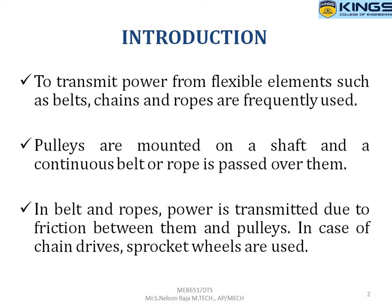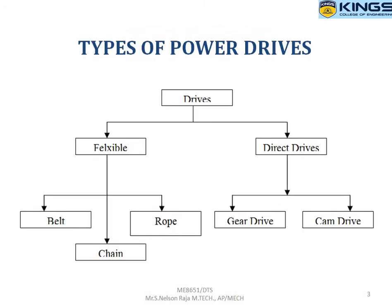Power transmitting elements are classified into two categories: flexible transmission systems and rigid transmission systems. Flexible power drives are flexible in nature, meaning they are movable, while rigid power transmission systems are in a fixed condition. The belt drive comes under the flexible power transmission system, used to transmit power over large distances. A pulley is attached to the shaft, and the belt circulates around the pulley. Power is transmitted from one place to another due to friction between the belt surface and the pulley.